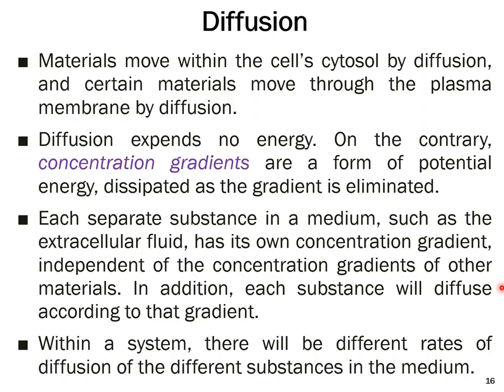Materials can pass through the plasma membrane through simple diffusion, and they also move within a cell's cytosol by diffusion. Diffusion expends no energy; on the contrary, concentration gradients are a form of potential energy that is dissipated as the gradient is eliminated — that is, when concentration becomes equal on both sides of the membrane.